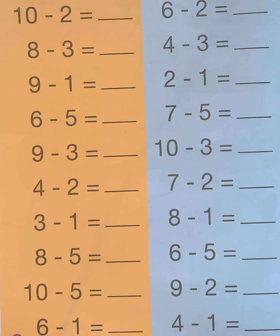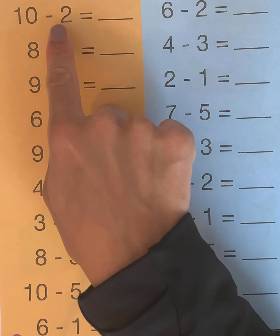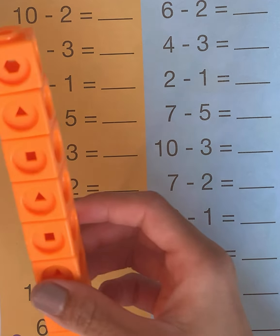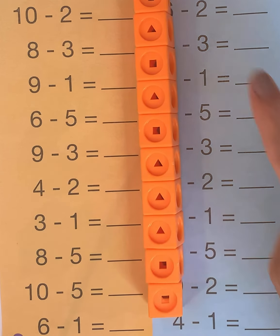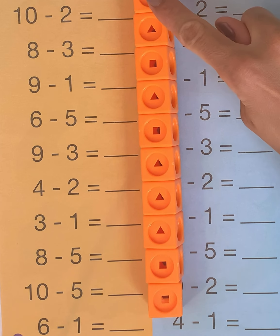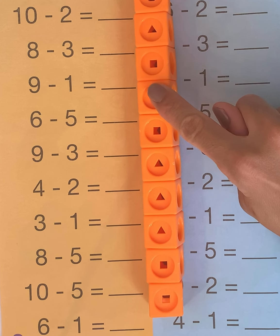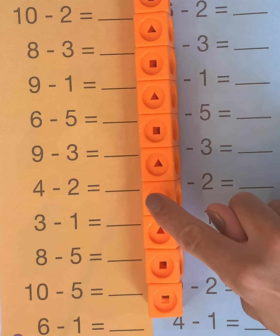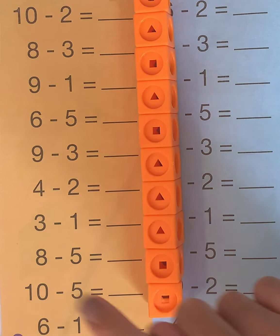Our first problem is 10 minus 2. So we have here 10 links. Let's count them together: 1, 2, 3, 4, 5, 6, 7, 8, 9, 10.